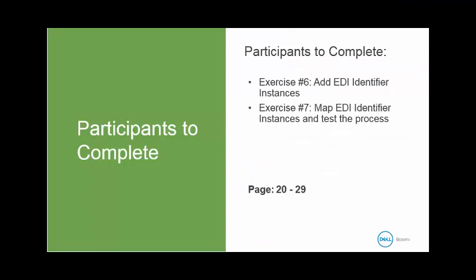Now it's your turn to do exercise number six to add the EDI identifier instance, and exercise number seven to map the EDI identifier instance and test the process. This begins in your book on page 20 and it goes up to page 29. Once you've completed this, you have completed the create portion of our class. We're going to be moving into the explore section, where we're going to be examining trading partners and acknowledgments.